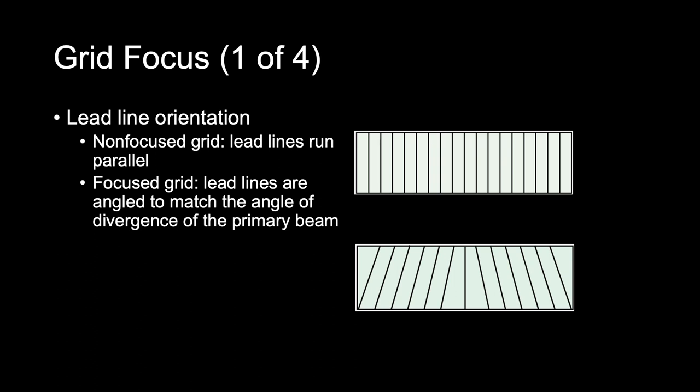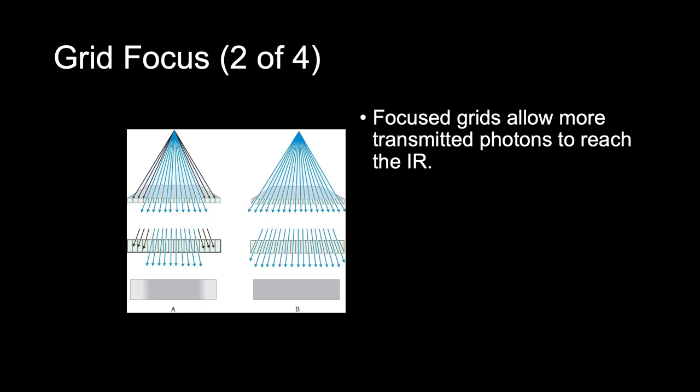The advantage of focused grids compared with parallel grids is that focused grids allow more transmitted photons to reach the IR. Transmitted photons are more likely to pass through a focused grid to reach the IR than they are to pass through a parallel grid, because focus grids have lead lines angled to approximately match the divergence of the primary beam.